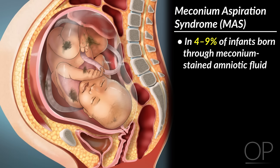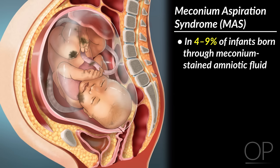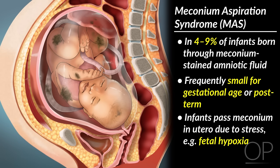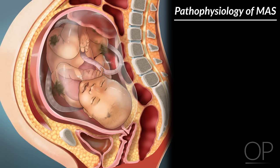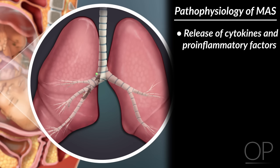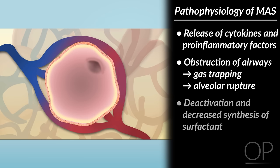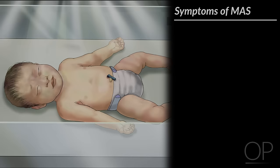Meconium Aspiration Syndrome: In 4–9% of infants born through meconium-stained amniotic fluid, meconium aspiration syndrome, MAS, is diagnosed. Affected infants are frequently small for gestational age or post-term. Infants pass meconium in utero due to stress, most commonly fetal hypoxia. The pathophysiology of MAS is a complex combination of many factors, including the release of cytokines and other pro-inflammatory factors following the aspiration of sterile meconium into the lungs, as well as obstruction of the airways leading to distal gas trapping with subsequent alveolar rupture, and the deactivation and decreased synthesis of surfactant.